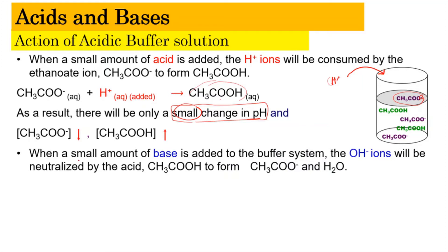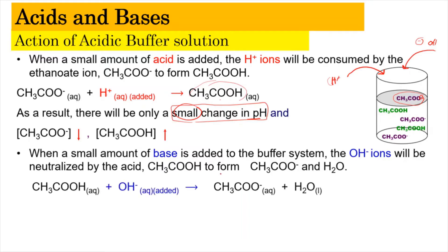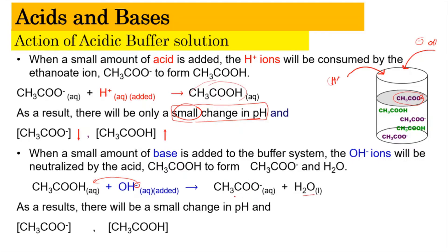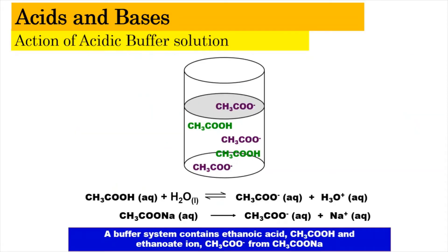Similarly, when a small amount of base is added to the buffer, the hydroxide ion takes the proton from CH3COOH, forming water and increasing the ethanoate ion concentration. As a result, there is only a small change in pH. The concentration of the ethanoate ion increases while the concentration of the ethanoic acid decreases.